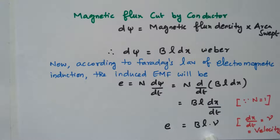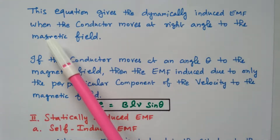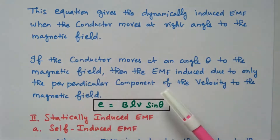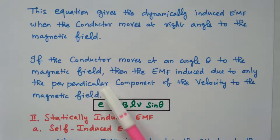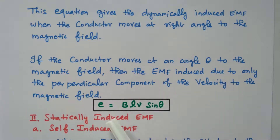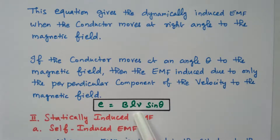So E = BLV gives the dynamically induced EMF when the conductor moves at right angles to the magnetic field. If the conductor moves at an angle theta to the magnetic field, then only the perpendicular component of the velocity contributes — the horizontal component is not considered. Therefore the induced EMF becomes E = BLV sin θ. This is the expression for dynamically induced EMF.